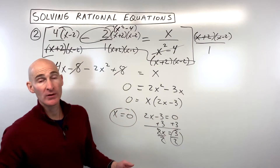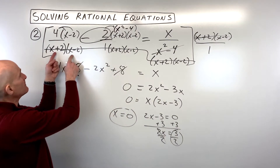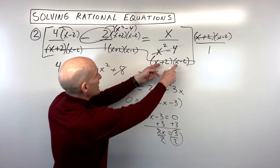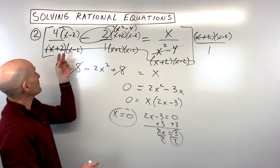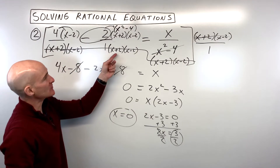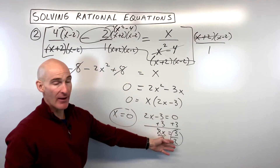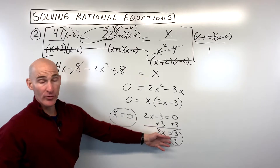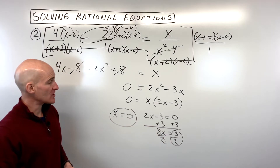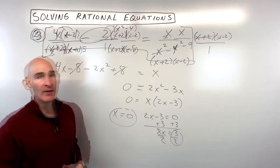Just like the previous problem, go back and ask: does that make my denominator equal to 0? The only thing that would make the denominator 0 is if x was negative 2 or positive 2 — that's not what we have here. So x equals 0 and x equals 3 halves are both valid solutions to this equation.